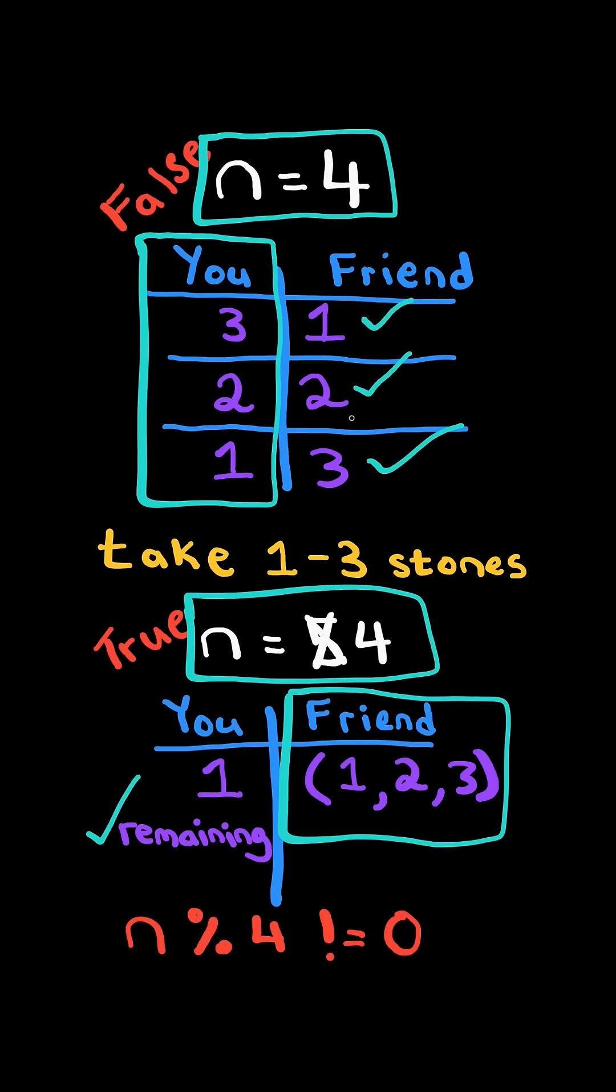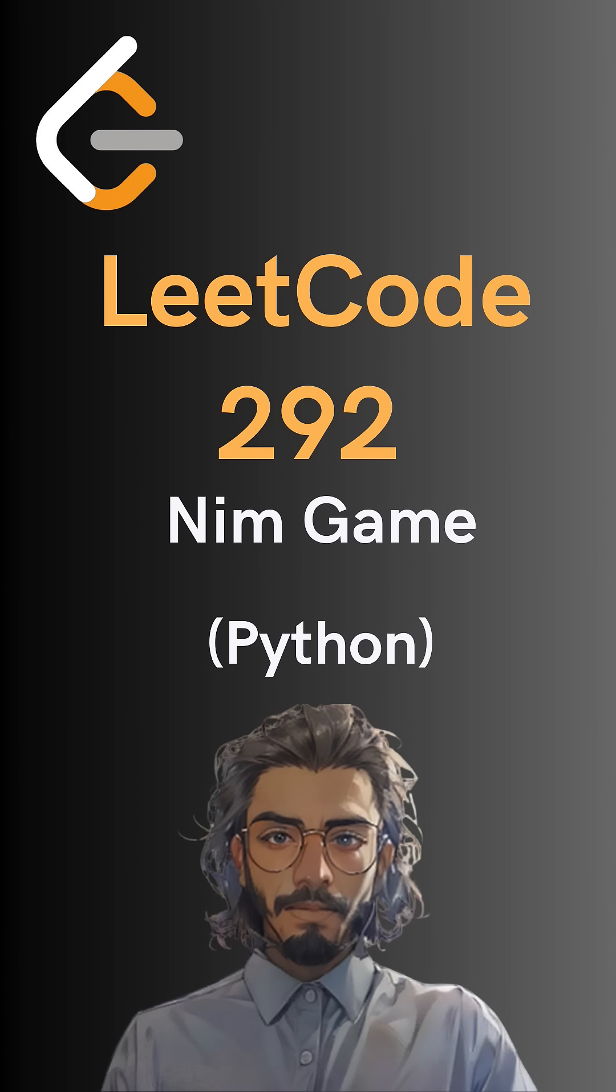In other words, if N does not evenly divide 4, we can force our friend into a losing state. And here is the code to do so. Please like all for more.